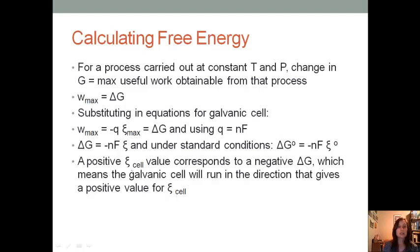We can take these equations and relate them to calculating free energy. For a process carried out at constant temperature and pressure, the change in free energy is equal to the maximum useful work obtainable for that process. So the maximum work equals delta G. We can then substitute some of our equations for the galvanic cell. We know that the maximum work equals negative charge times the cell potential maximum. We also know that charge equals the number of moles times Faraday's constant. So if we combine these, we get that the change in free energy equals negative n times F times the cell potential. If we're in standard conditions, that's basically what these little circles mean. Same idea, negative n, F, standard cell potential.